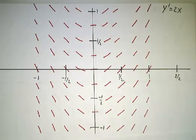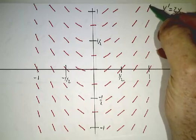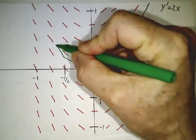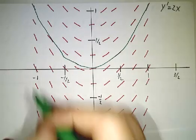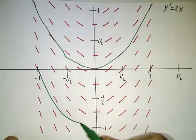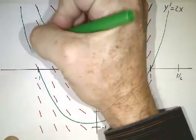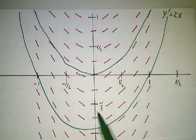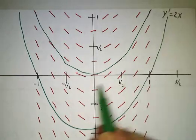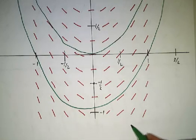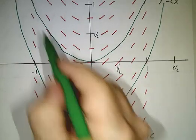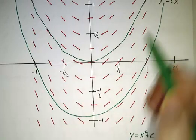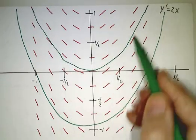You can draw solutions to this — a solution will look something like a parabola. Another solution might look like another parabola shifted up or down. There is a solution through every point, but just giving you the differential equation doesn't tell you what the solution is. If I give you a differential equation and a starting point, then you can work out the solution. In this case, the solutions are y equals x squared plus a constant — you can see the derivative of that is 2x. They're all parabolas and they follow these direction field lines.